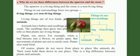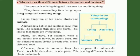For example, when a bud blooms into a flower, its petals open. But movements of plants are not so easily seen. Plants also need food. Of course, plants do not move from place to place like animals do — their roots hold them down in one place. This is a big difference between plants and animals.